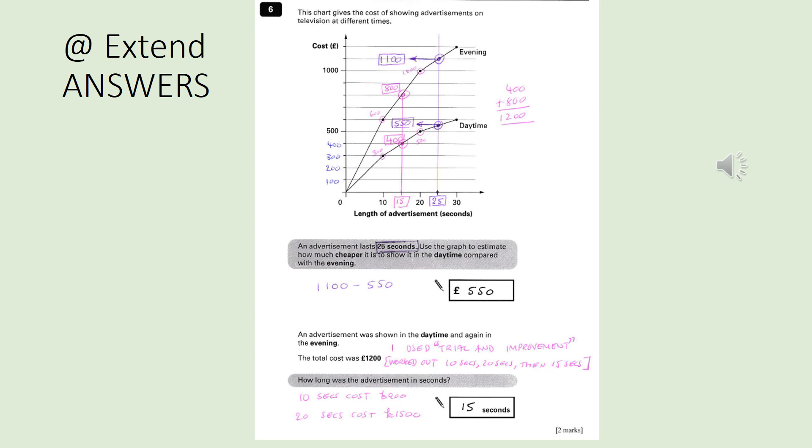I'm going to be so impressed if you even had a go at this one because it was tricky. So well done if you've had a go and listen carefully to how I talk through the answers. So an advertisement lasts 25 seconds. How much cheaper would it be in the daytime compared to the evening? So at 25 seconds in the daytime, that looks like it would be around 550 pounds. In the evening, it would cost about 1,100 pounds. You can see there that those are in purple. So the difference between those is 550 pounds.